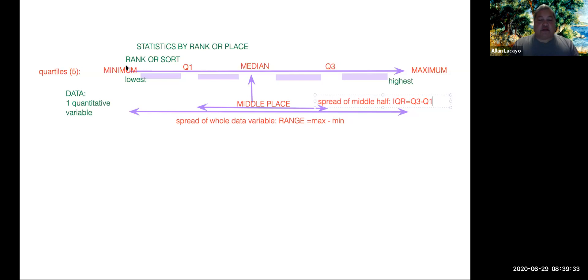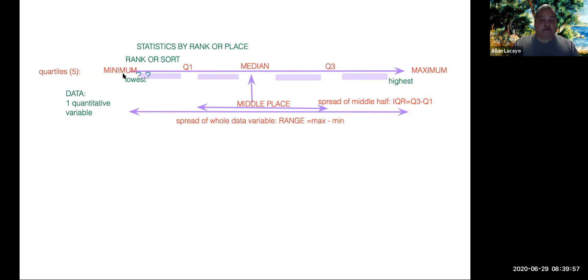Aside from looking at data where all values are treated as equally valid, we develop from Tukey's method a way to identify strange or unusual values — values that happen to be extremely low or extremely high. We call those extreme values outliers. The study of outliers is the next concept of importance.